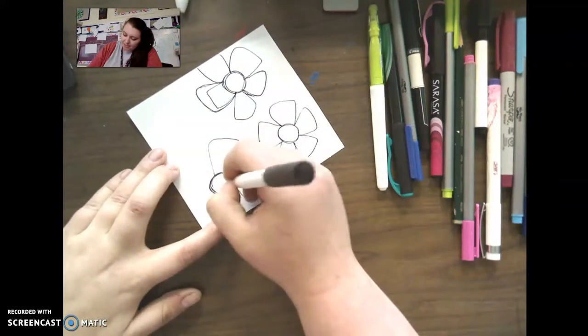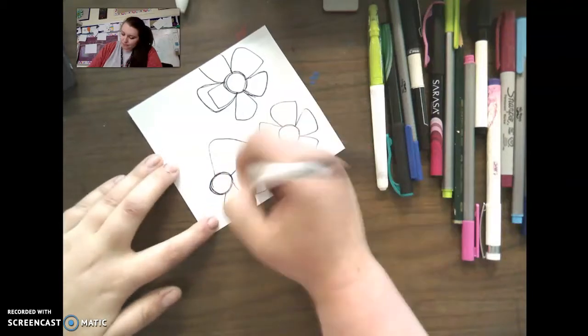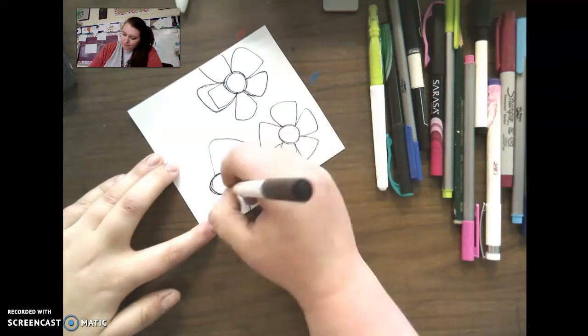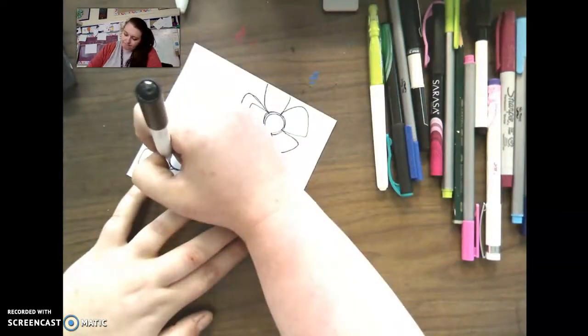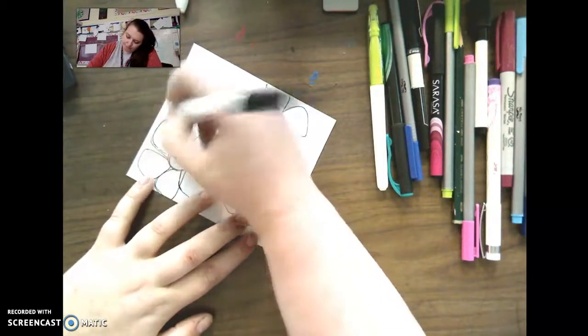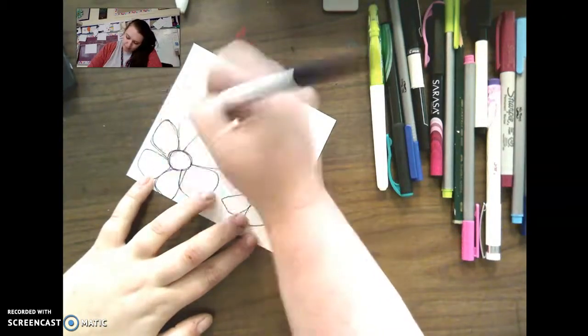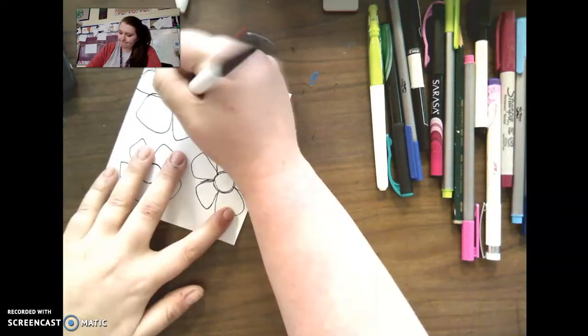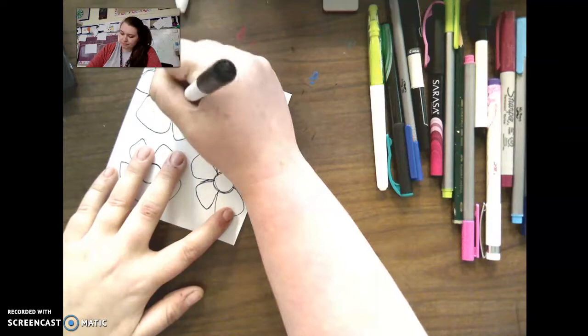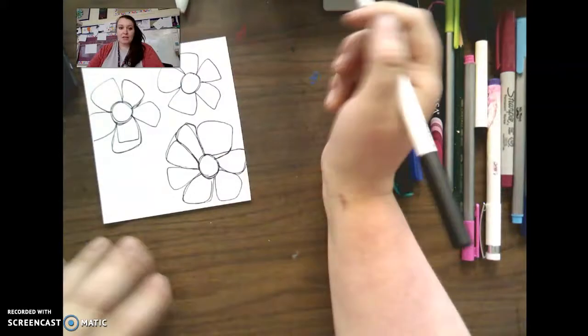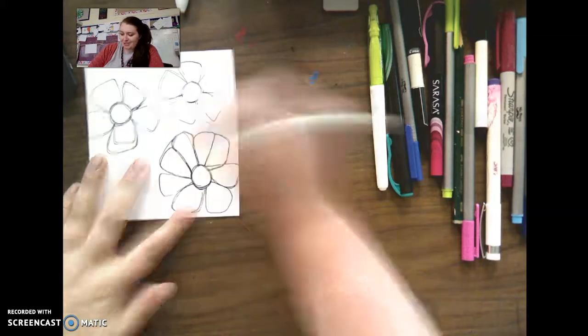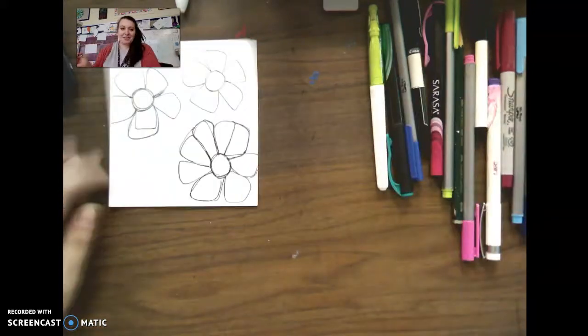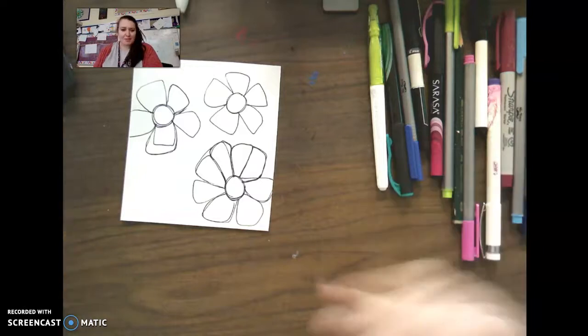And if I'm going too quickly, you can always pause it. All right, so I love making mistakes and turning them into something different. I think it always looks really cool when you do that. So okay, there I have my three flowers with lots of mistakes. It's awesome.